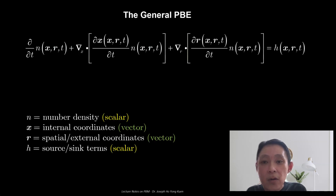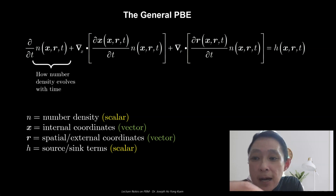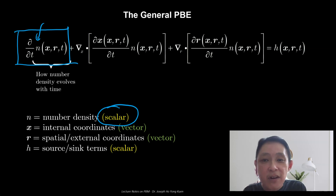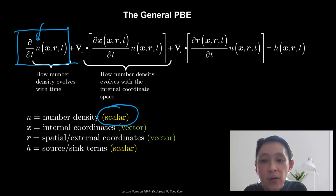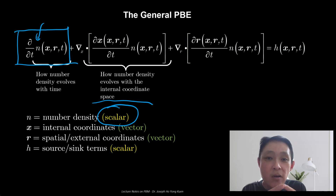Remember in the last video we showed this general population balance equation. The first term in this general PBE tells us how the number density evolves with time. The number density is represented by this small n here and it's a scalar component. This partial derivative of the number density with respect to time gives how it evolves with time. The second term tells us how the number density evolves with the internal coordinate space. If your particle is capable of growing in size over time, there's going to be a velocity of the particle in the internal coordinate space or in the space of particle size.